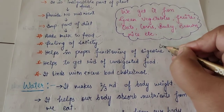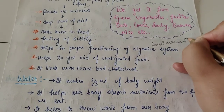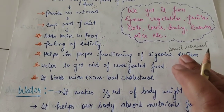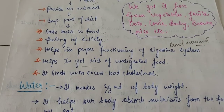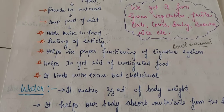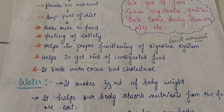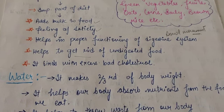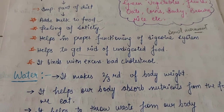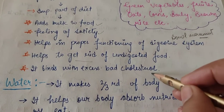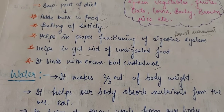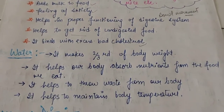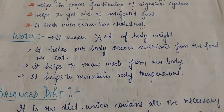Second, roughage helps in the proper functioning of the digestive system, which is also known as bowel movement. It helps prevent constipation. It also helps to get rid of undigested food — it acts like a cleaning agent for our digestive tract. Additionally, it binds with excess bad cholesterol, thus preventing the accumulation of bad cholesterol and protecting us from heart attacks.